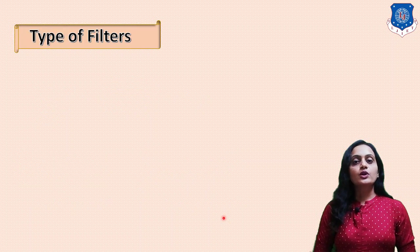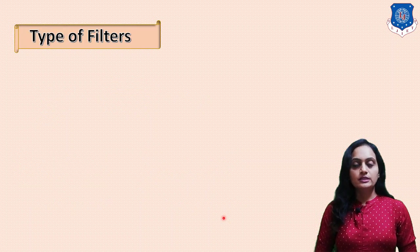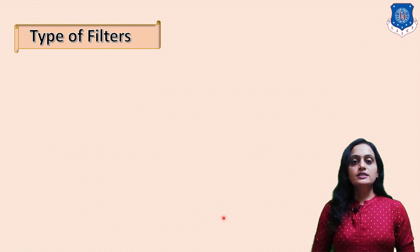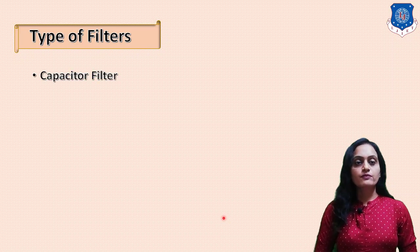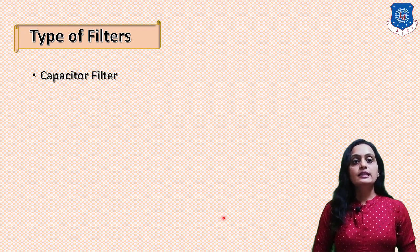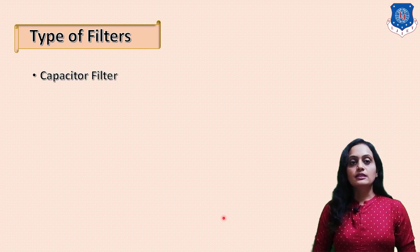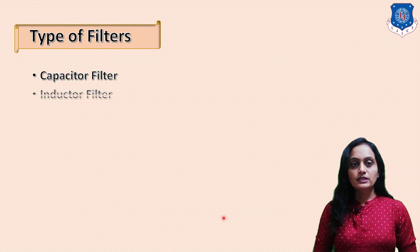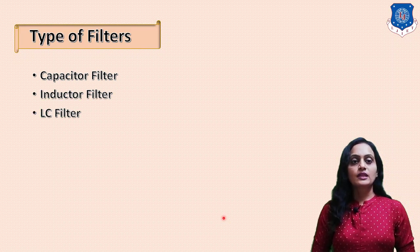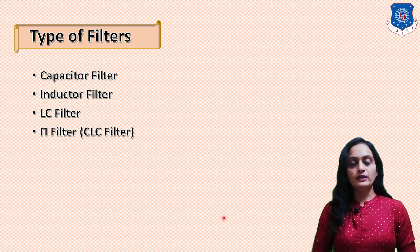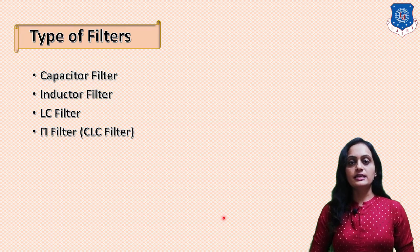Now we will see what are the types of filters. The first and very simple is the capacitor filter. Then we will see the inductor filter. Then the LC filter. Then the pi filter, that is the CLC filter.